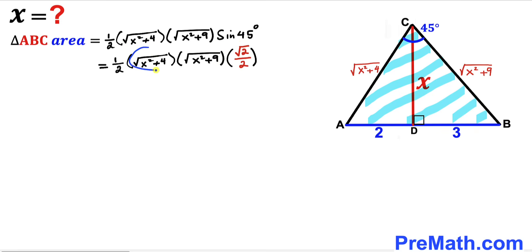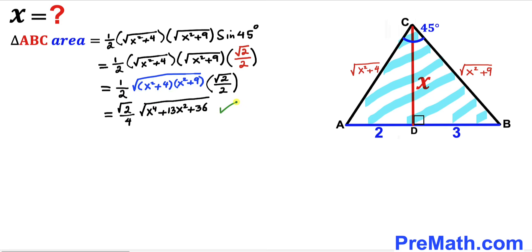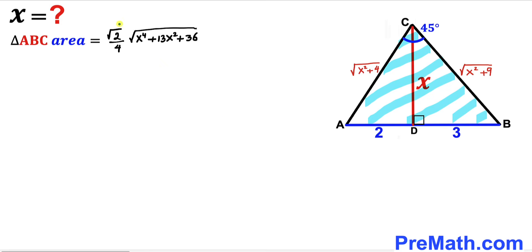Now let's combine the two radicals: √(x² + 4) · √(x² + 9) = √[(x² + 4)(x² + 9)]. Multiplying ½ by √2/2 gives √2/4. Expanding the binomials gives x⁴ + 13x² + 36. So the area of triangle ABC equals (√2/4) · √(x⁴ + 13x² + 36). I'll label this equation number 1.